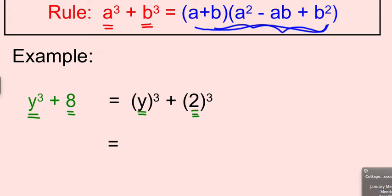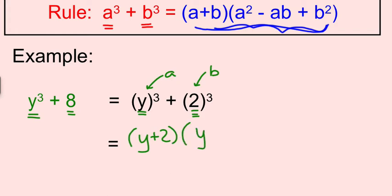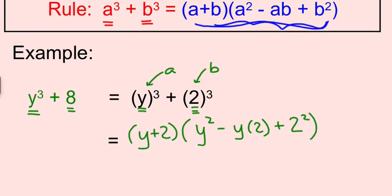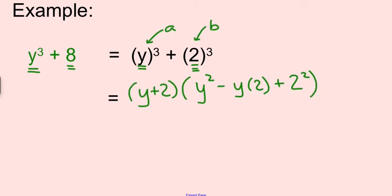This is going to be your A, and that's going to be your B in the rule. So how it'll look would be y plus 2 and then y² minus y times 2 plus 2². And then you just clean up that second parenthesis. So y² negative y times 2 is negative 2y. And then 2 times 2 is 4.